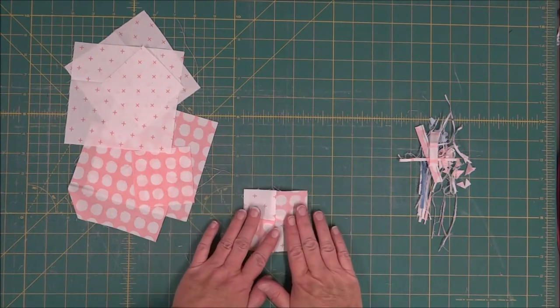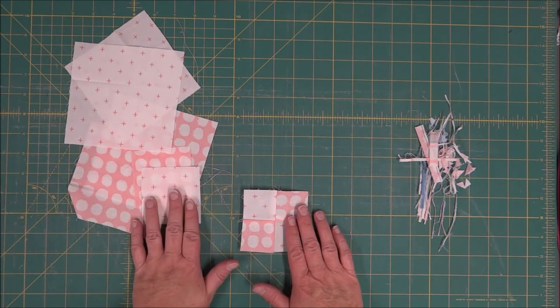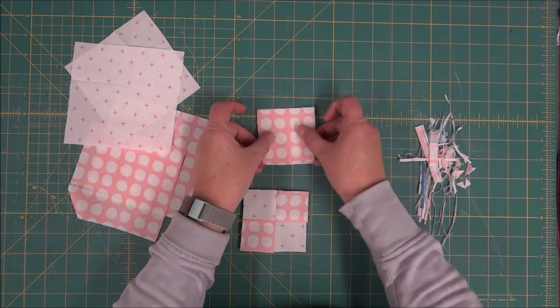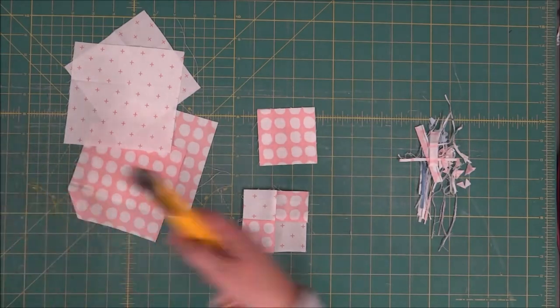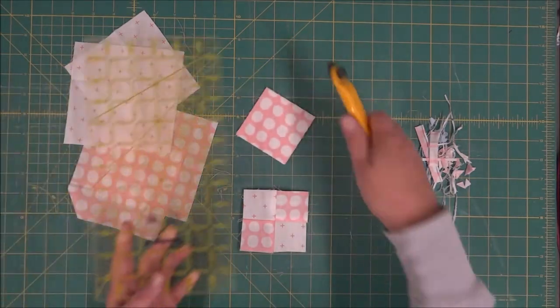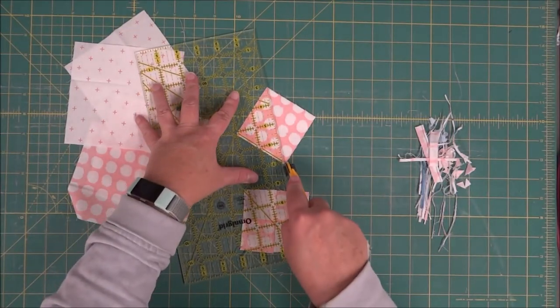Before we can add on, we're going to have to take some of these squares and cut them in half on the diagonal. We're going to take our background as well as our colored block. This is going to be the smallest piece. We're going to cut these in half diagonally from corner to corner.